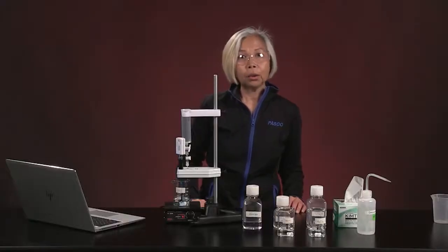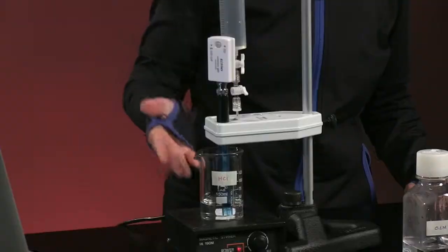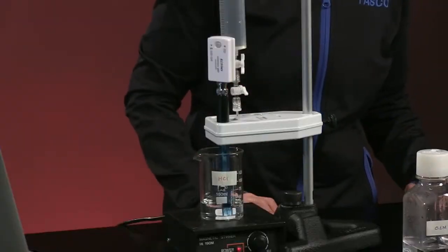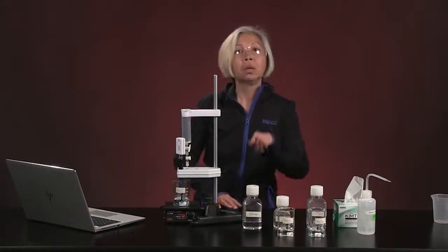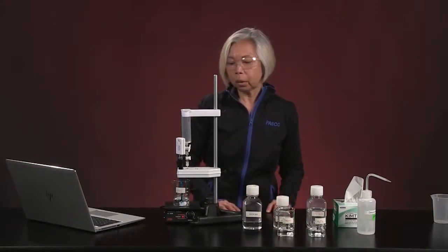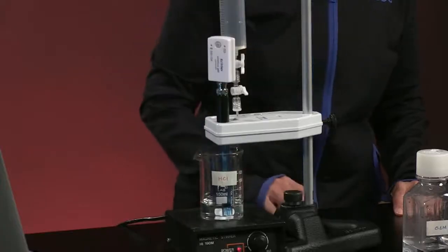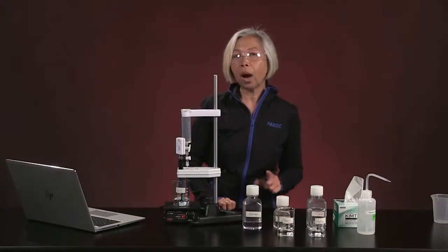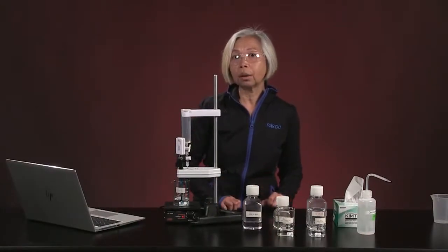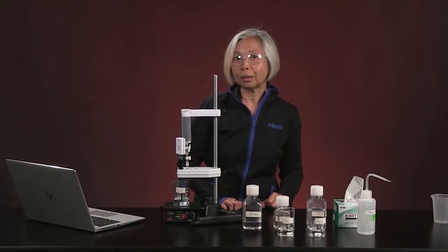We are now ready to do our first titration. We now have a beaker here of hydrochloric acid. Remember that I measured out 10 milliliters of our 0.1 molar hydrochloric acid, and I added some water to make sure that the electrode is properly submerged in it. My quick question to you is, why doesn't it matter that we added water to our hydrochloric acid solution?